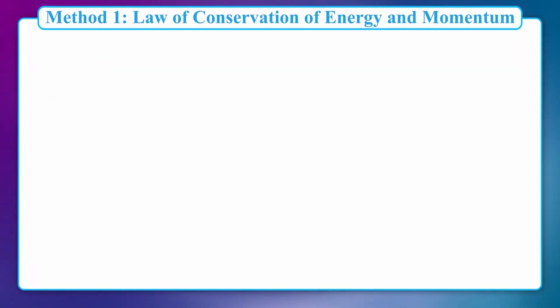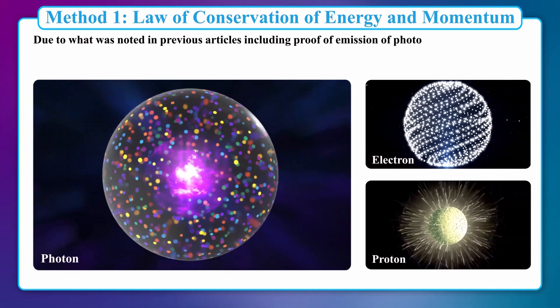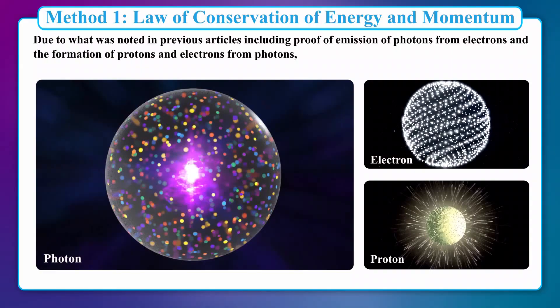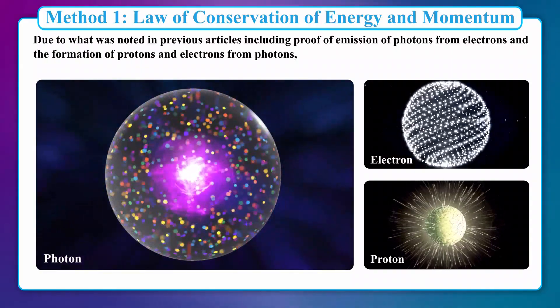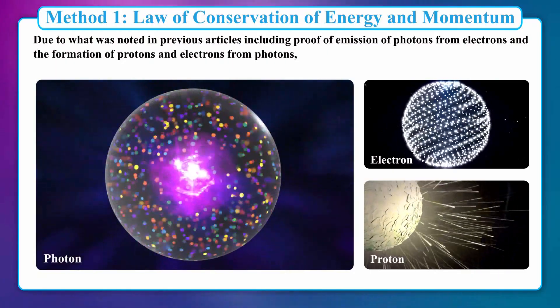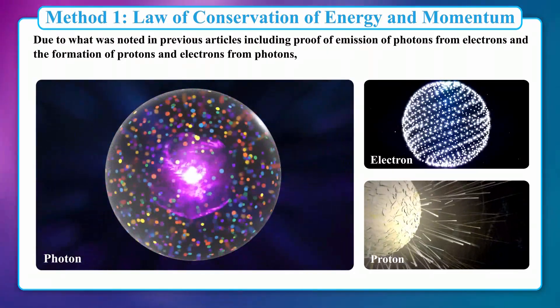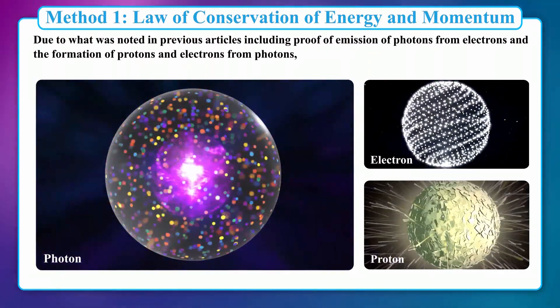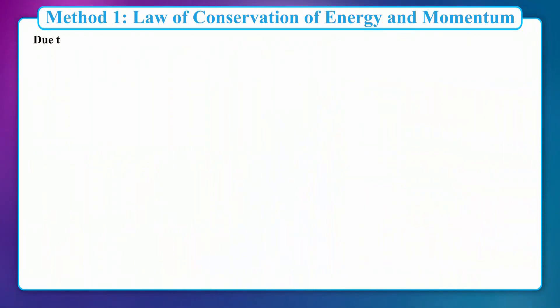Method 1: Law of Conservation of Energy and Momentum. Due to what was noted in previous articles, including proof of emission of photons from electrons and formation of protons and electrons from photons, the following relations can be written.